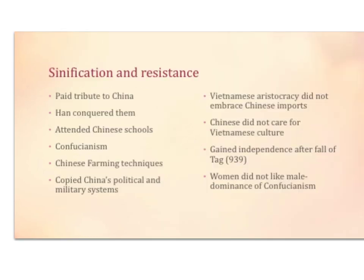China did not have the same relationship with Vietnam as it did with Japan and Korea. There is a lot of resistance on behalf of the Vietnamese people. However, they did pay tribute to China, usually by force. Han conquered them, they attended Chinese schools, there is a rise of Confucianism, and Chinese farming techniques were adopted. The Vietnamese also copied China's political and military system. The Vietnamese aristocracy, though, never fully embraced Chinese imports the way the upper class in Japan and Korea did. The Chinese did not care for Vietnamese culture either. Vietnam gained independence after the fall of the Tang dynasty in 939. Women did not like the male dominance of Confucianism because women in Vietnam are more independent than in other Asian countries.